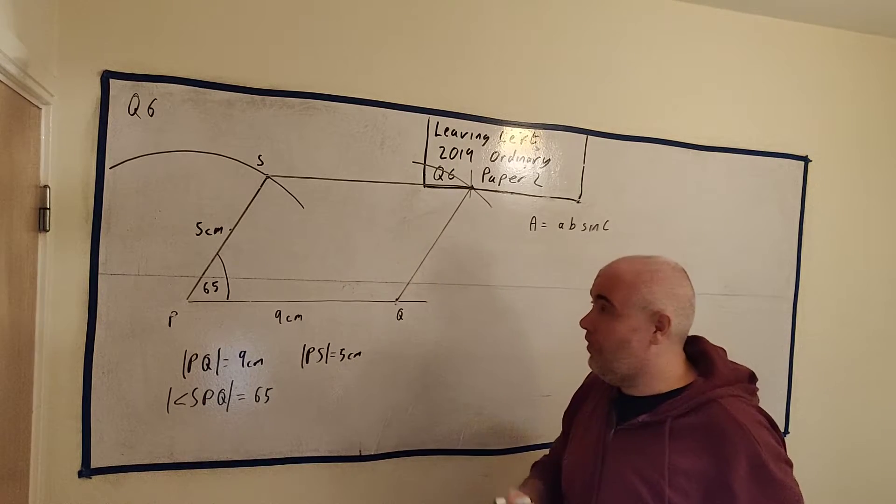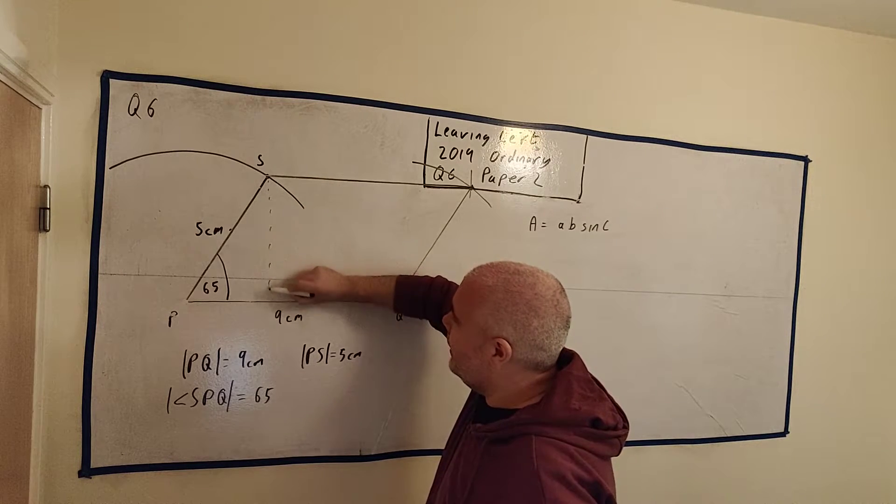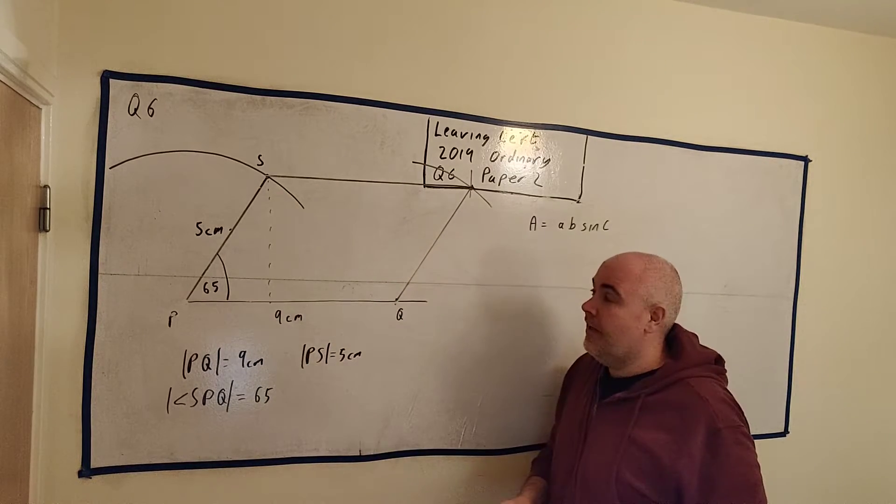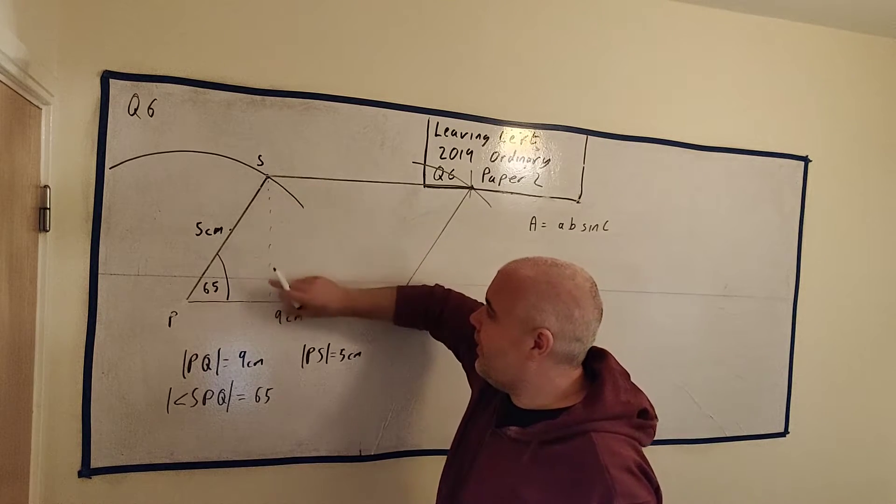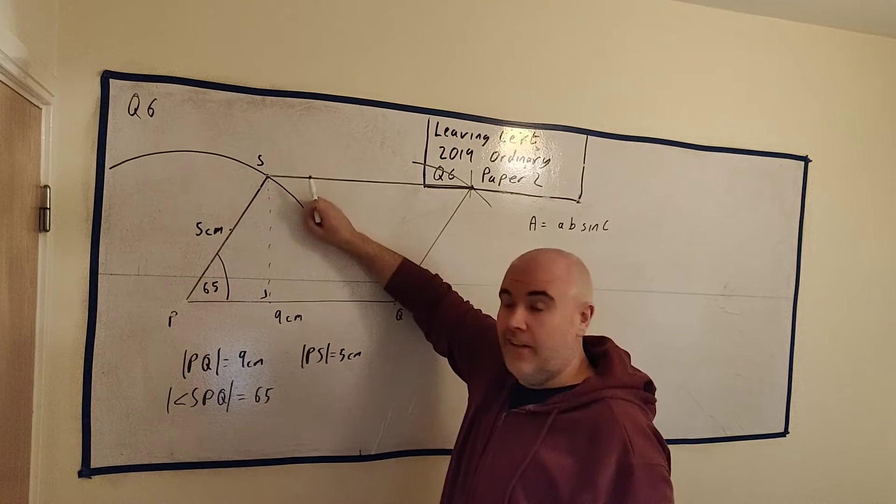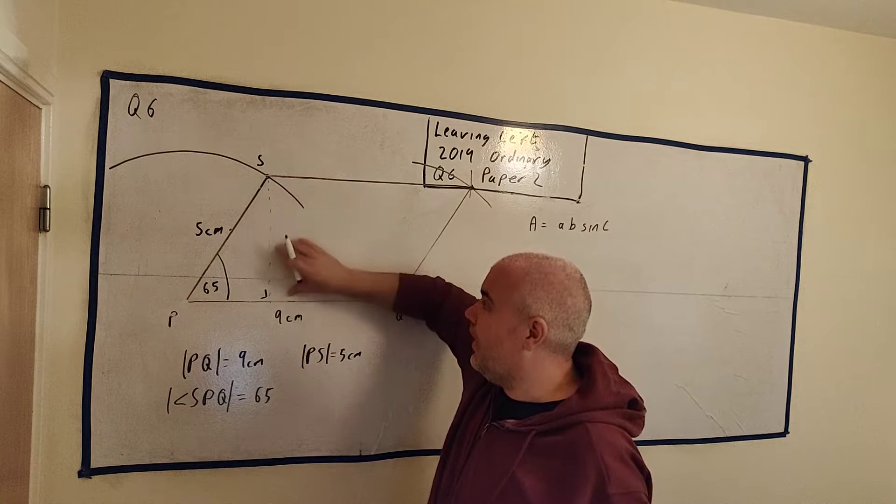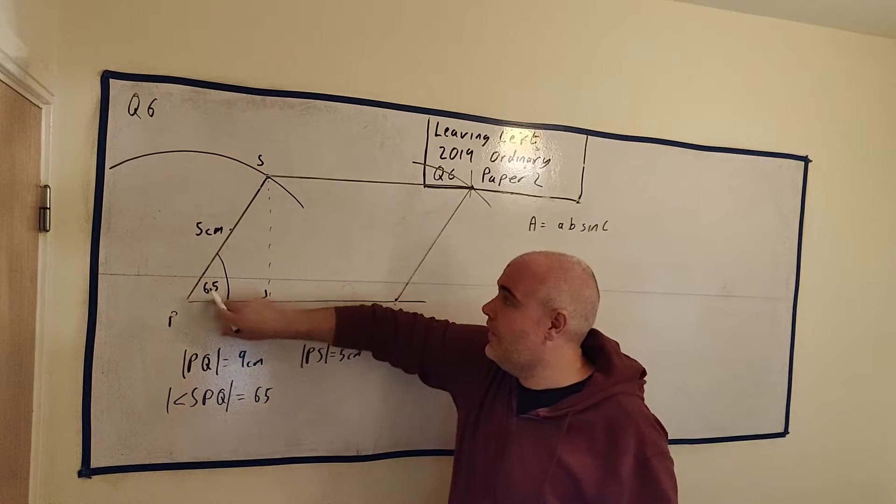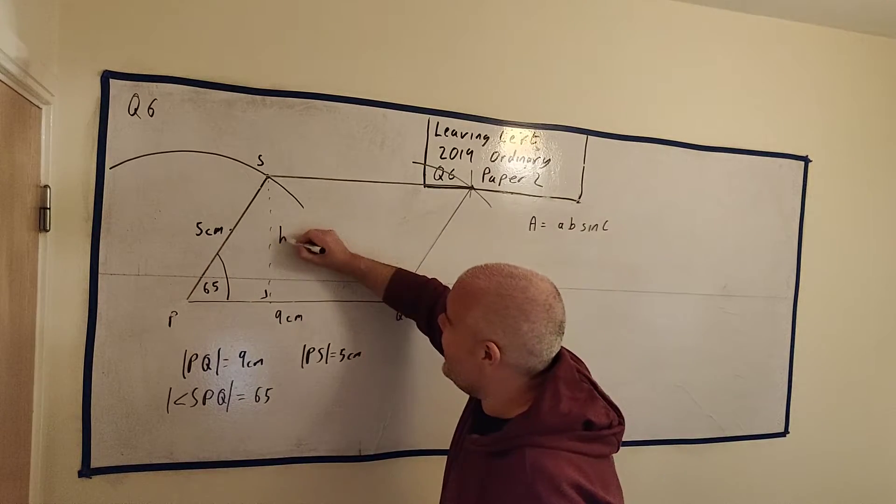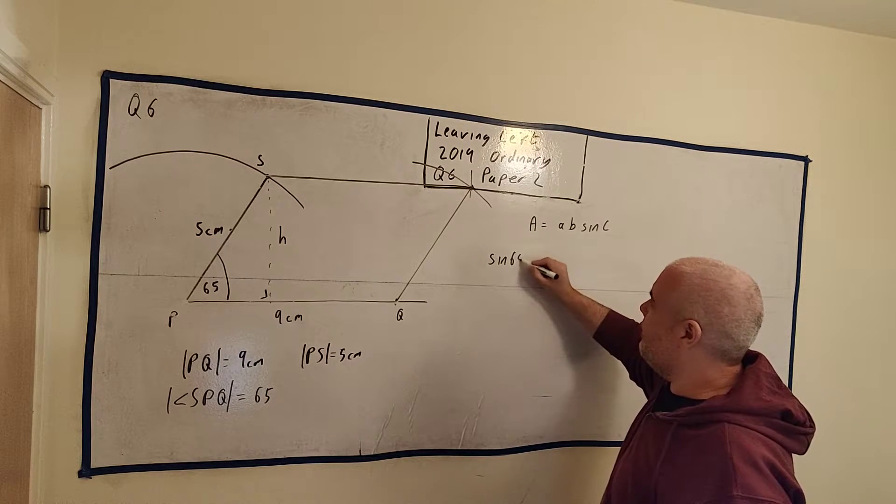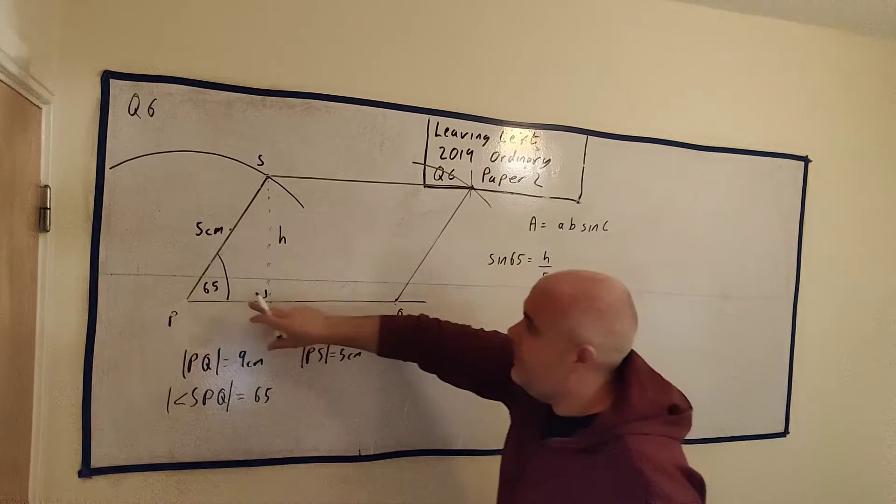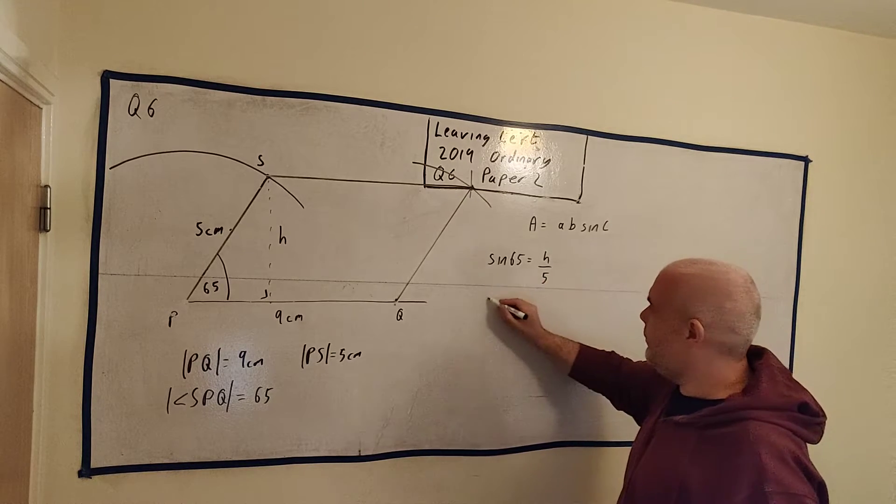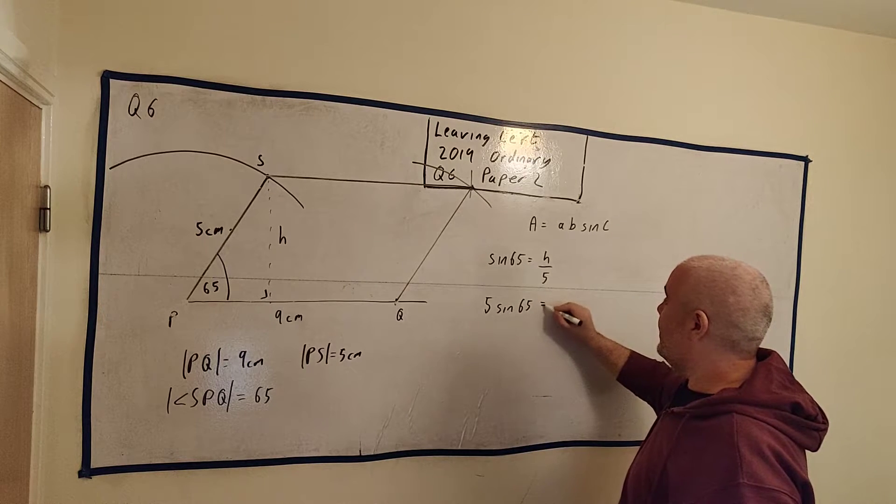If for some reason you didn't remember there was a formula, you could do this using trigonometry. Now I wouldn't expect all students to do this, but I'll just point it out very quickly how that would work. We need the height. The area of a parallelogram is the base times the height. So you would need this height, and you do that through trigonometry, through a right angle triangle here. That would be sine of this angle is equal to the height divided by the hypotenuse. But that's already here, the sine of this angle.